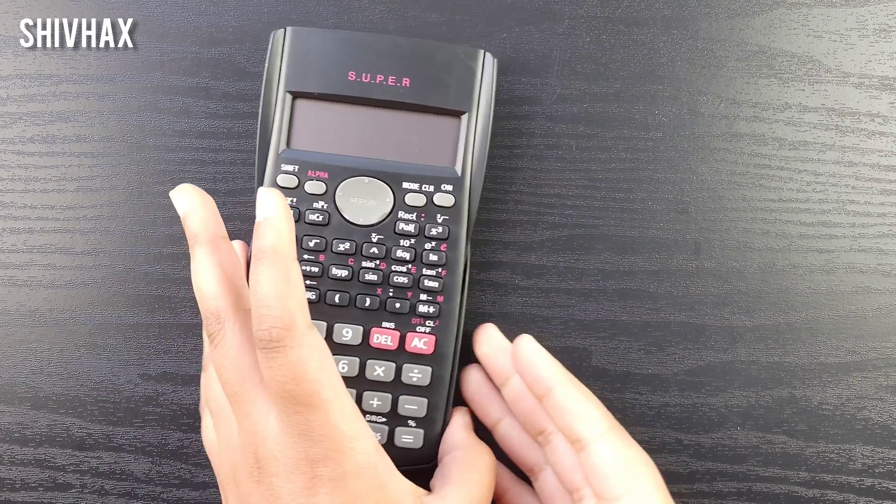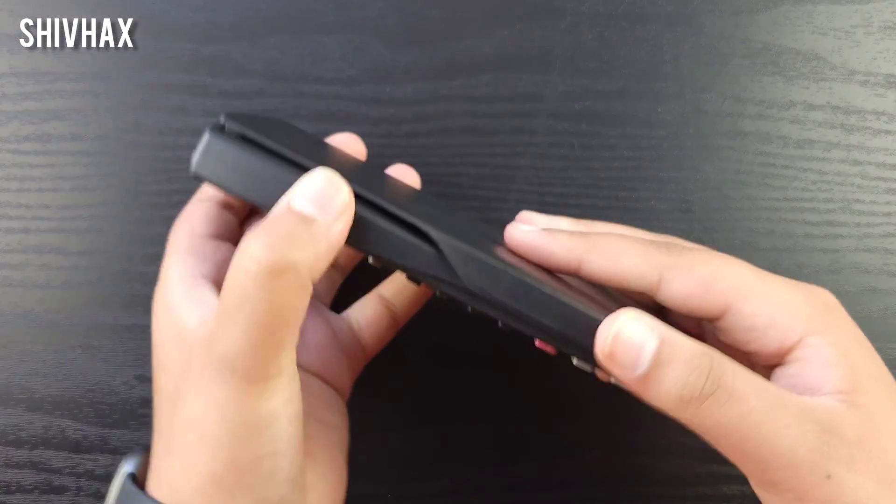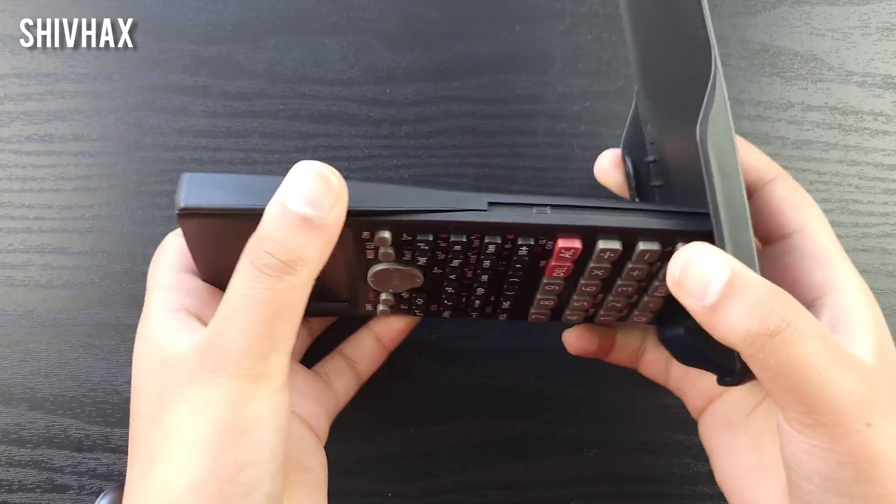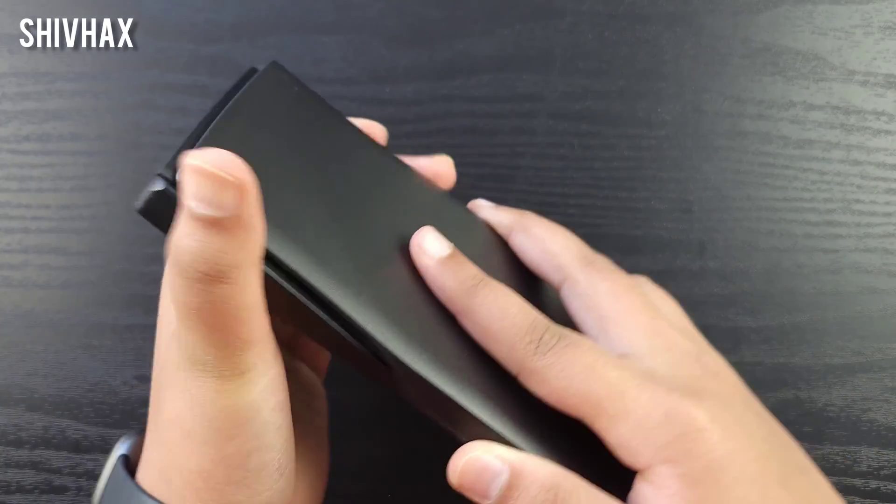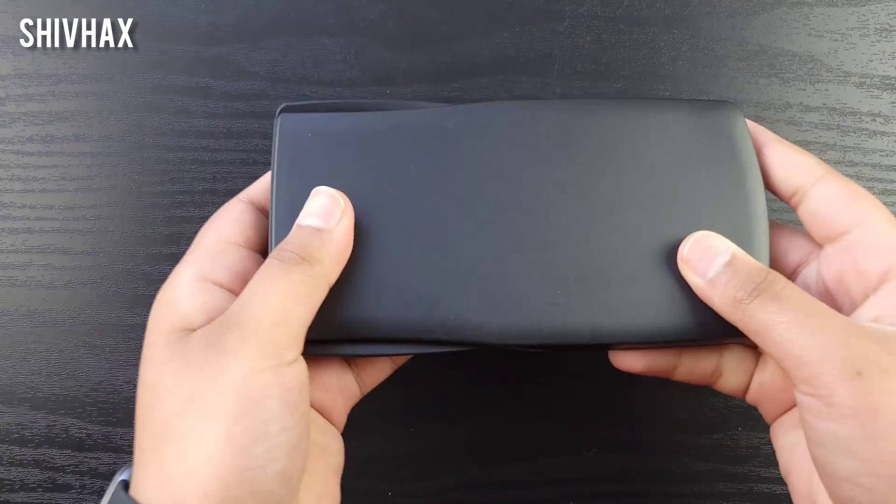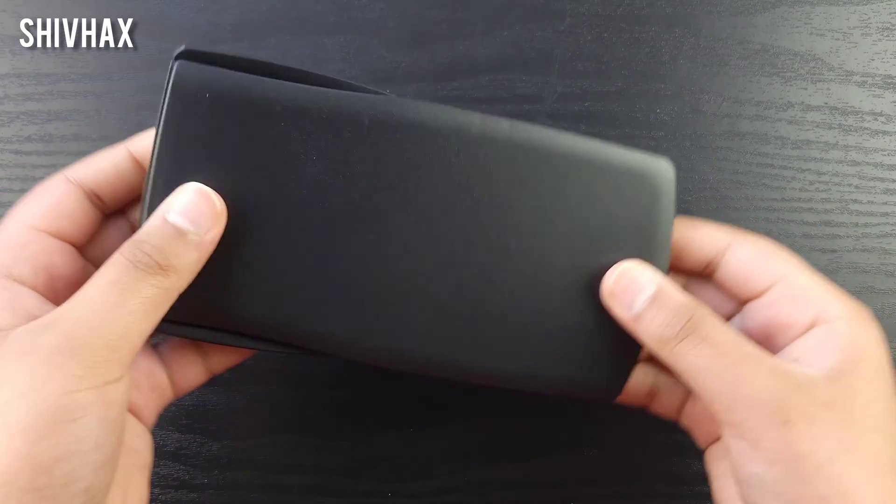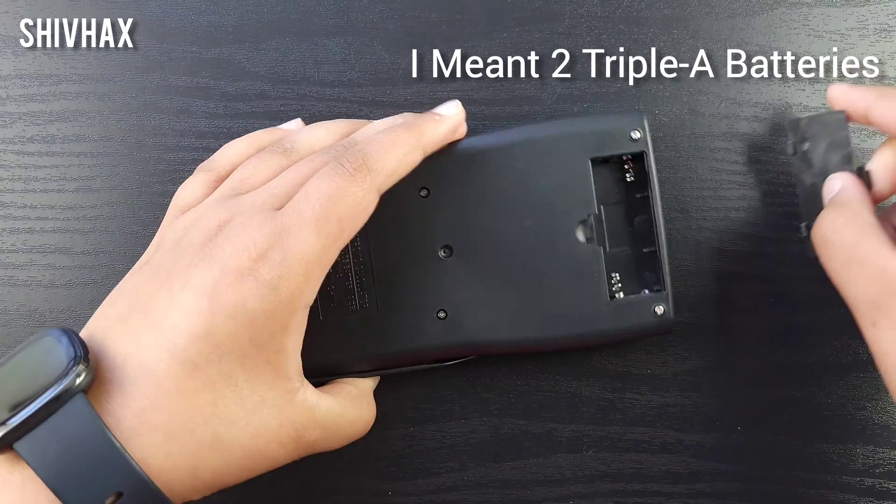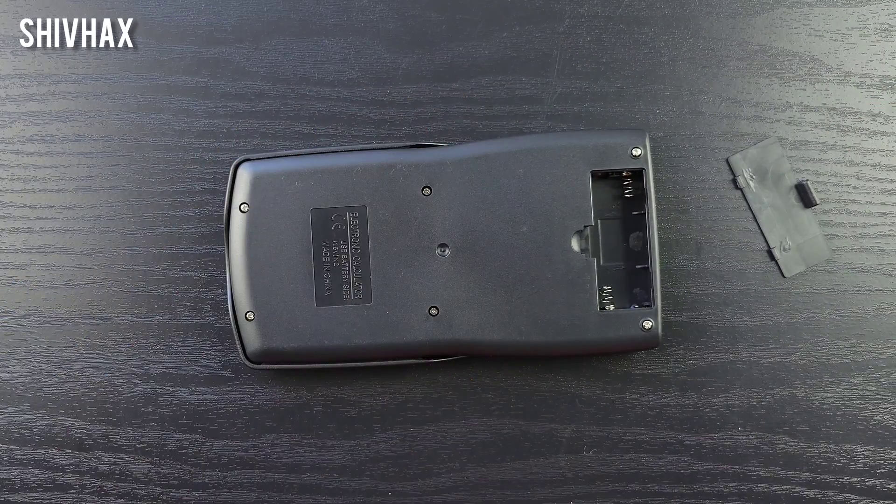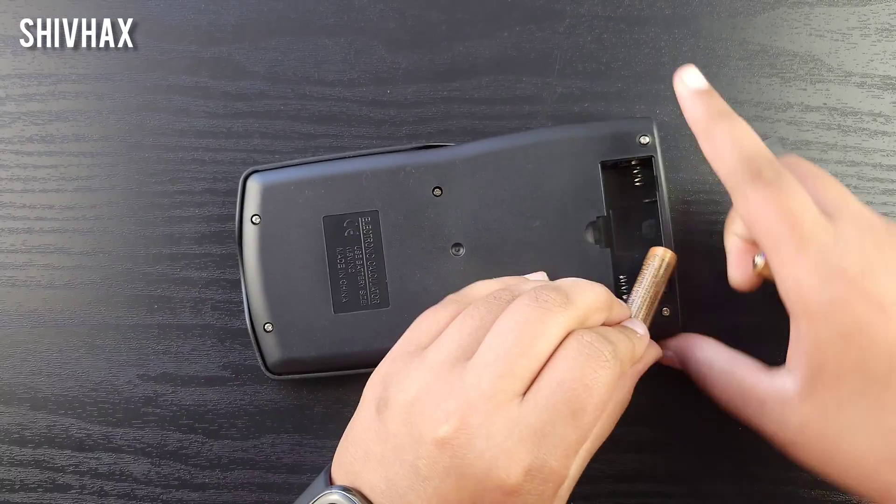The calculator has a lid over here that you just slide out like that, and it'll stay protected. On the back there's the cover where you put two double-A batteries, which are not included, so you have to use your own.